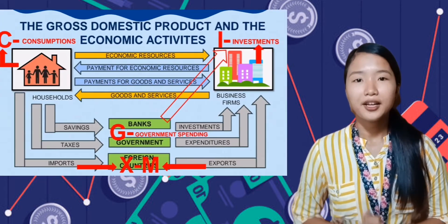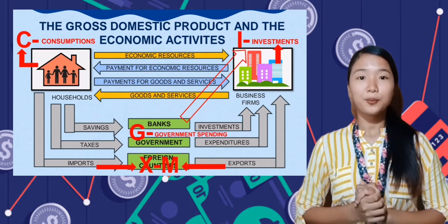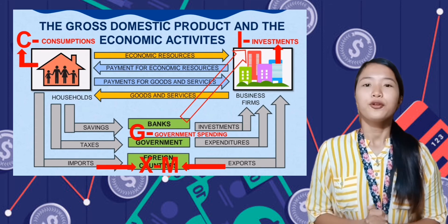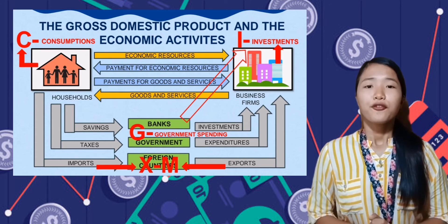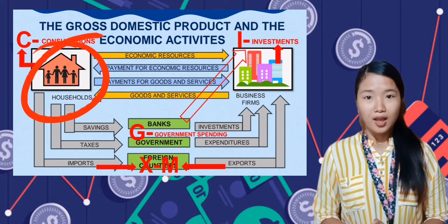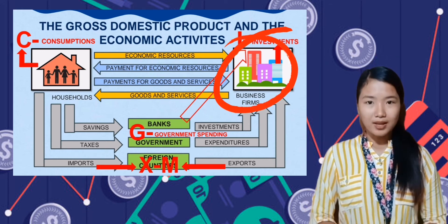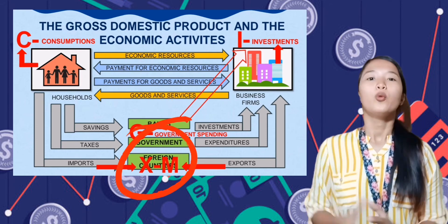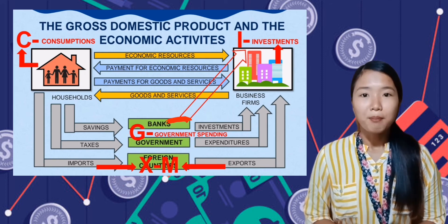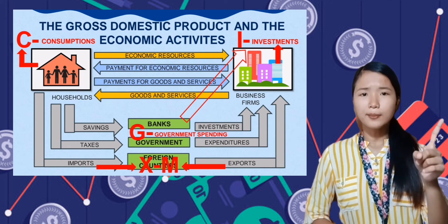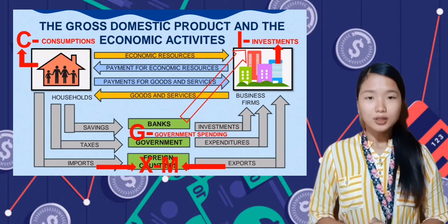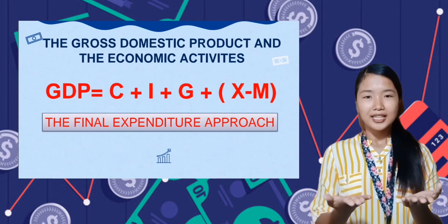Knowing that inflow and outflow must be balanced or equal, we can use this diagram to determine how to compute the gross domestic product of our country. From the household, we can determine consumption. From the business firm, we can determine investments. From the government, we can determine government spending. And from foreign countries, we can determine net exports, which is exports minus imports. In all, consumption, investment, government spending, and net exports form the formula for GDP, known as the final expenditure approach.